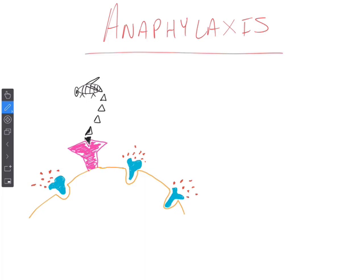The easiest way to describe it is: when a bee stings one of your patients, the bee releases these triangle-shaped antigens, and those fit directly into this pink Y-shaped looking structure called an antibody. When the antibody receives an antigen, it basically kick-starts the process of anaphylaxis.